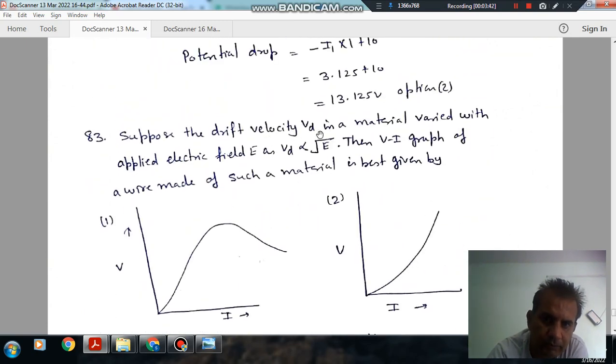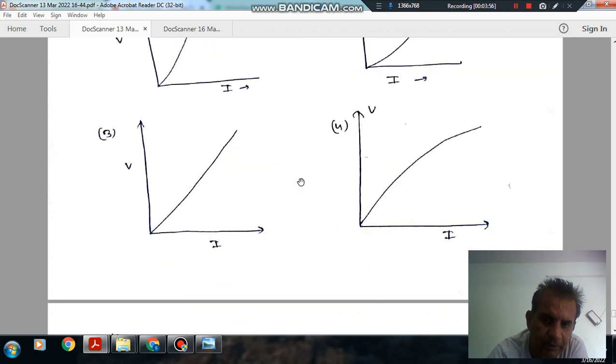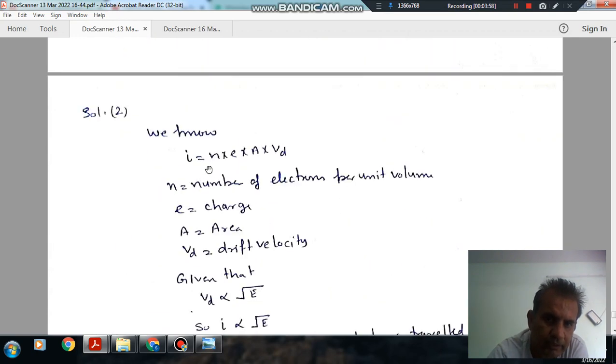Suppose drift velocity VD in a material varied with electric field E as VD is proportional to root E. The V-I graph of the wire made of such a material is best given by, so I is N E A VD.